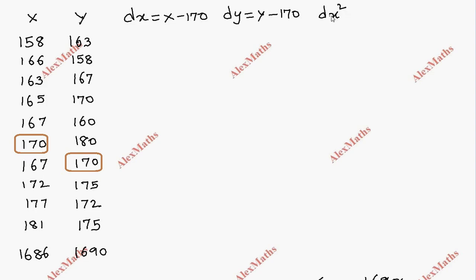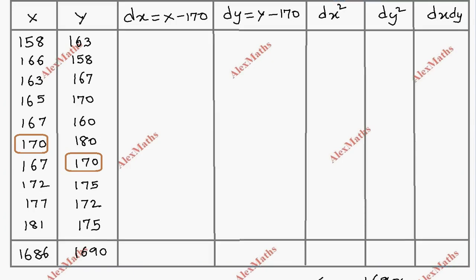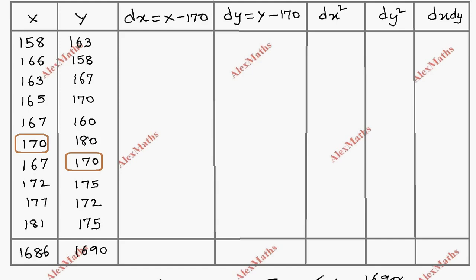I'll create columns for dx squared, dy squared, and dx dy. First, calculating dx values: 158 minus 170 equals minus 12, then minus 4, minus 7, minus 5, minus 3, 0, then 0, minus 3, 2, and 7, which gives 11. The sum is minus 14.